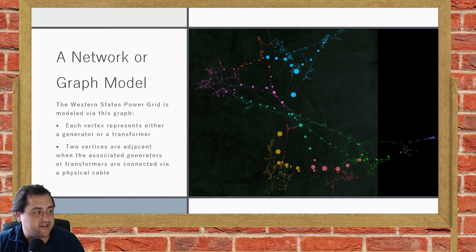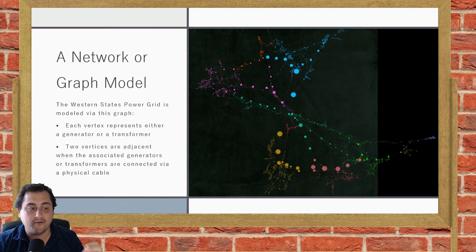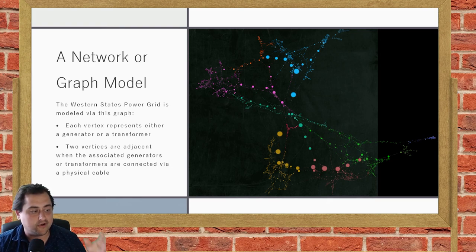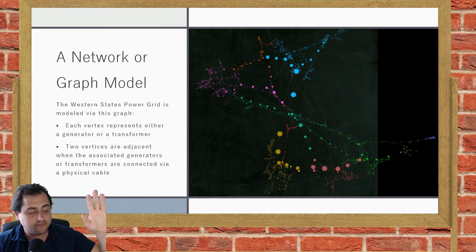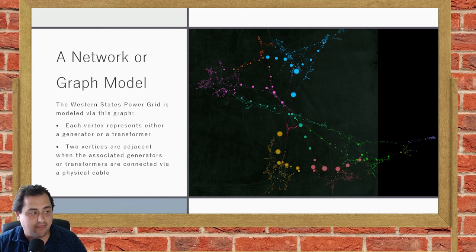In context, what we're actually looking at here is the Western States power grid. This was based on research on the power grid of the Western United States. The vertices represent something - they're either generators or transformers. How do we know to draw an edge between generators, or a generator and transformer, or two transformers? In this case, we're talking about physical power lines between those transformers or generators. Someone took that data of all the generators and transformers and how they're connected via power lines. That's a set of vertices together with a set of edges.